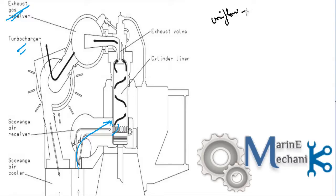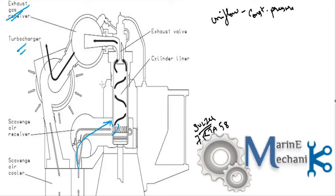One thing to understand is the type of scavenging, which is uniflow, and the type of turbocharging system, which is constant pressure. This means all units — let's say it's a 7 RTA 58 Sulzer engine — all seven units exhaust into the exhaust receiver or manifold where the exhaust pulses get nullified and a constant pressure is produced, which goes to the turbocharger. That's constant pressure turbocharging.